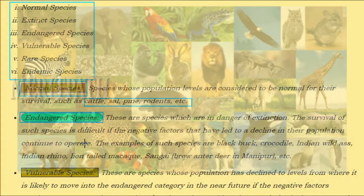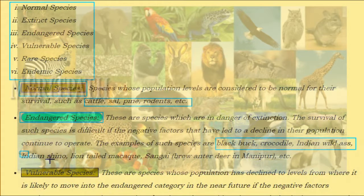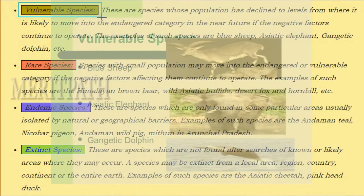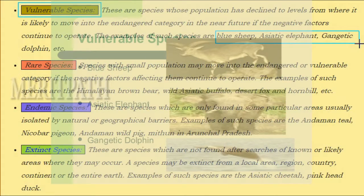Examples of endangered species include the black buck, crocodile, Indian wild ass, Indian rhino, lion-tailed macaque, and sangai (brow-antlered deer of Manipur). Vulnerable species are those whose population has declined to levels from which they are likely to move into the endangered category if negative factors continue to operate. Examples include blue sheep, Asiatic elephant, and Gangetic dolphin.